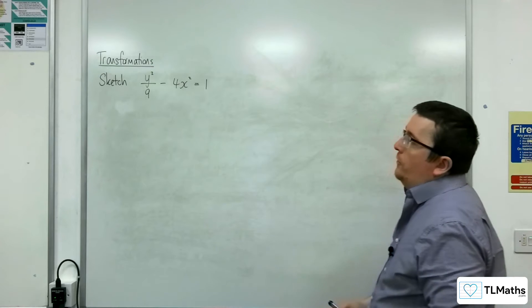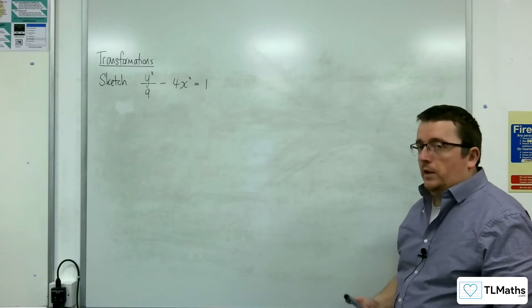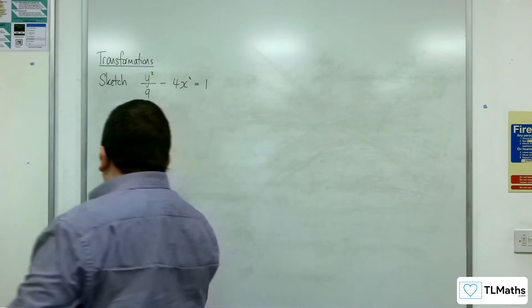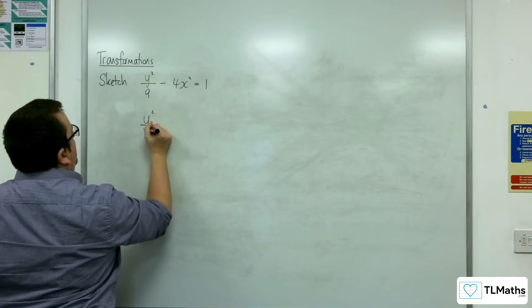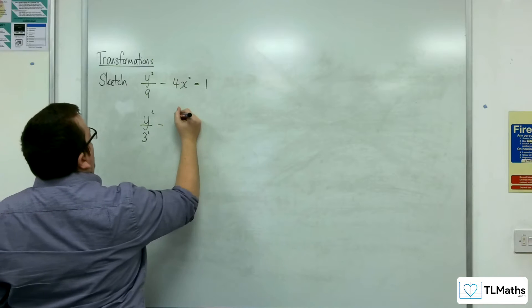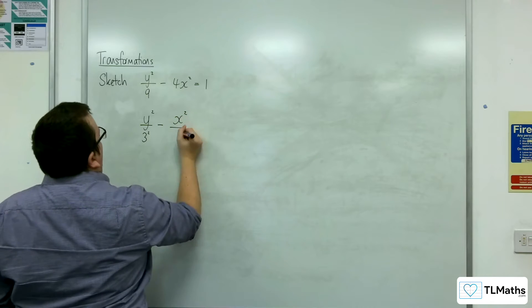In this video I'm going to sketch y squared over 9 take away x squared over 4 equals 1. So first thing I'm going to do is write it as y squared over 3 squared, take away x squared over...